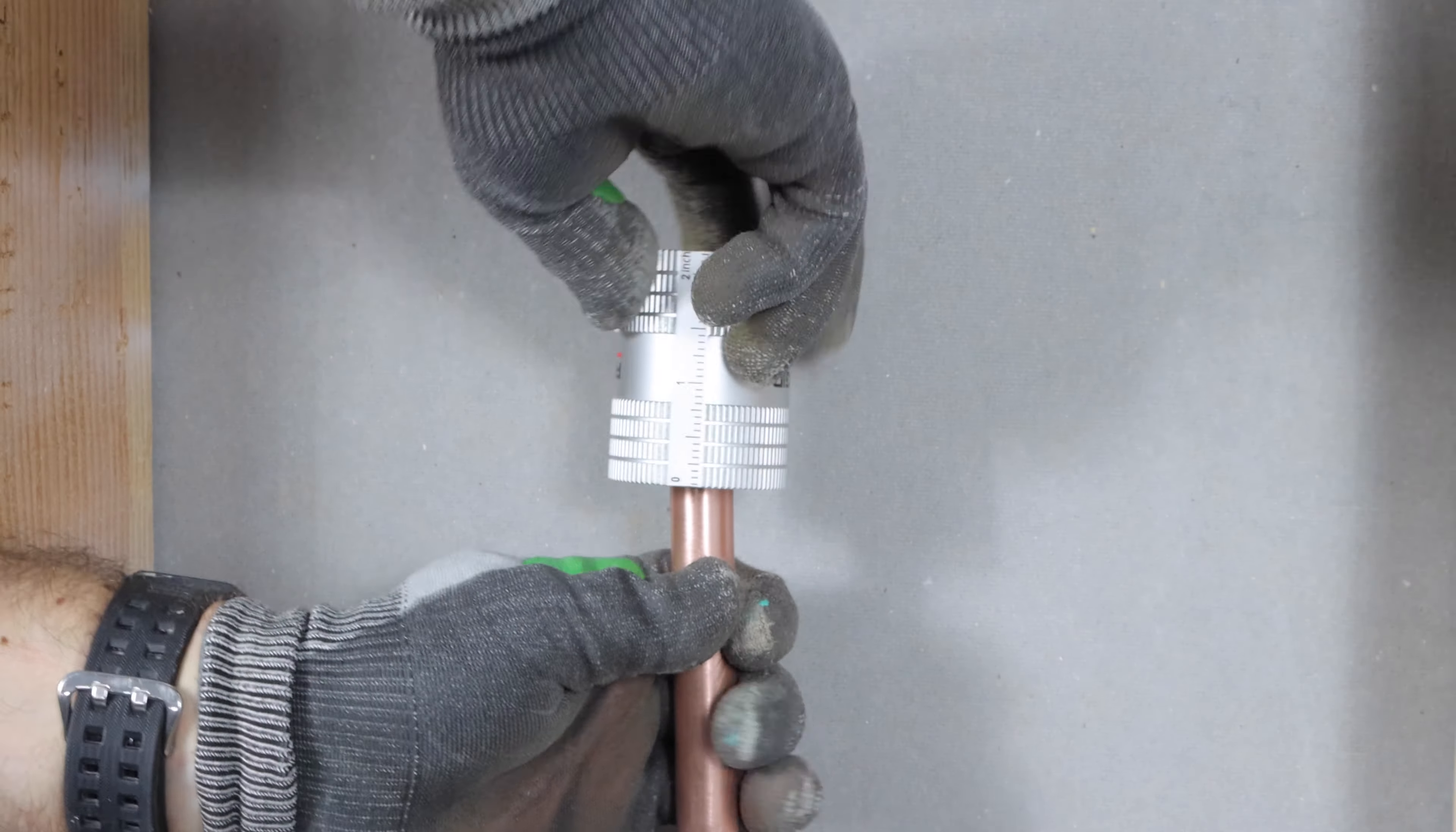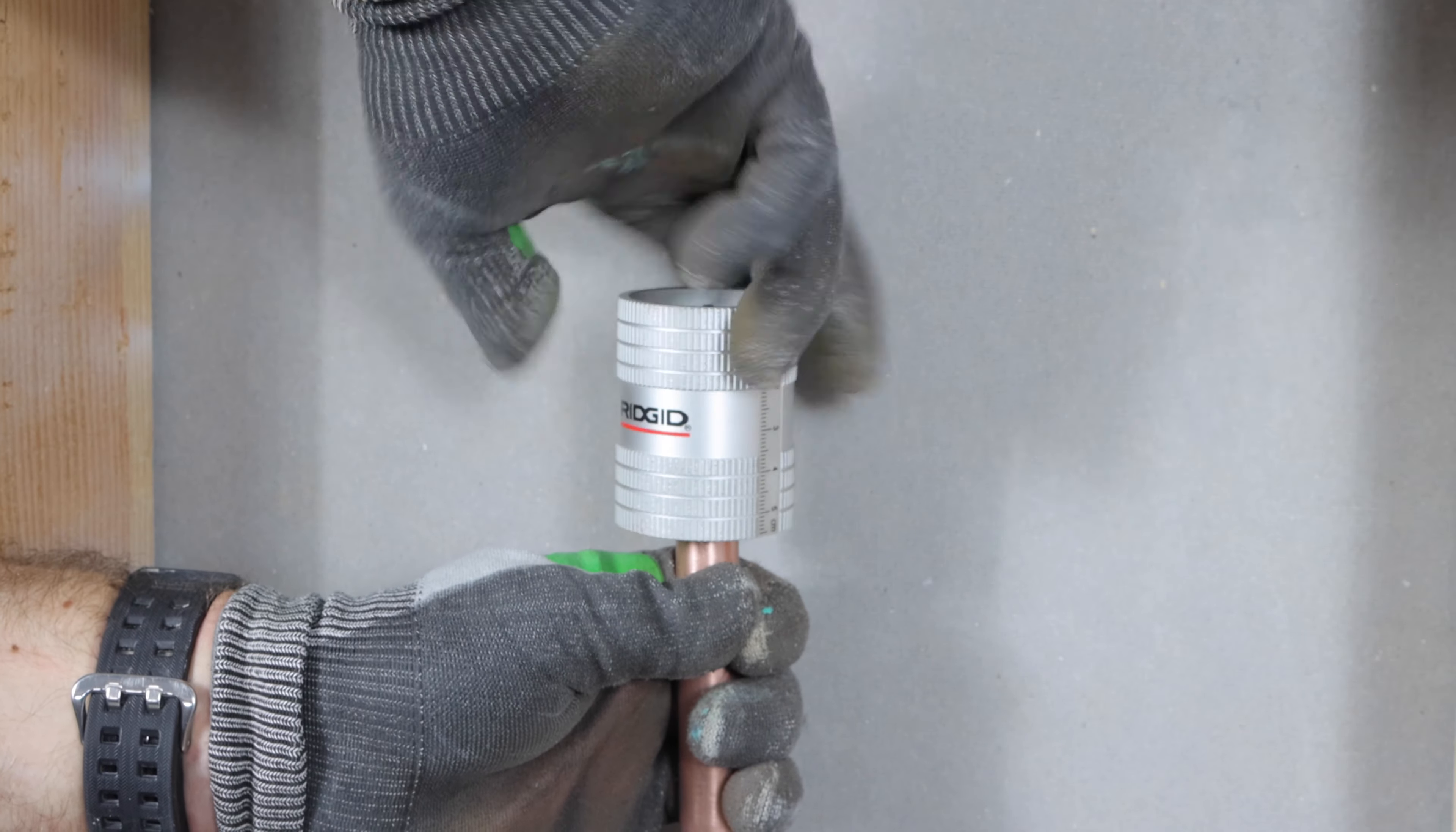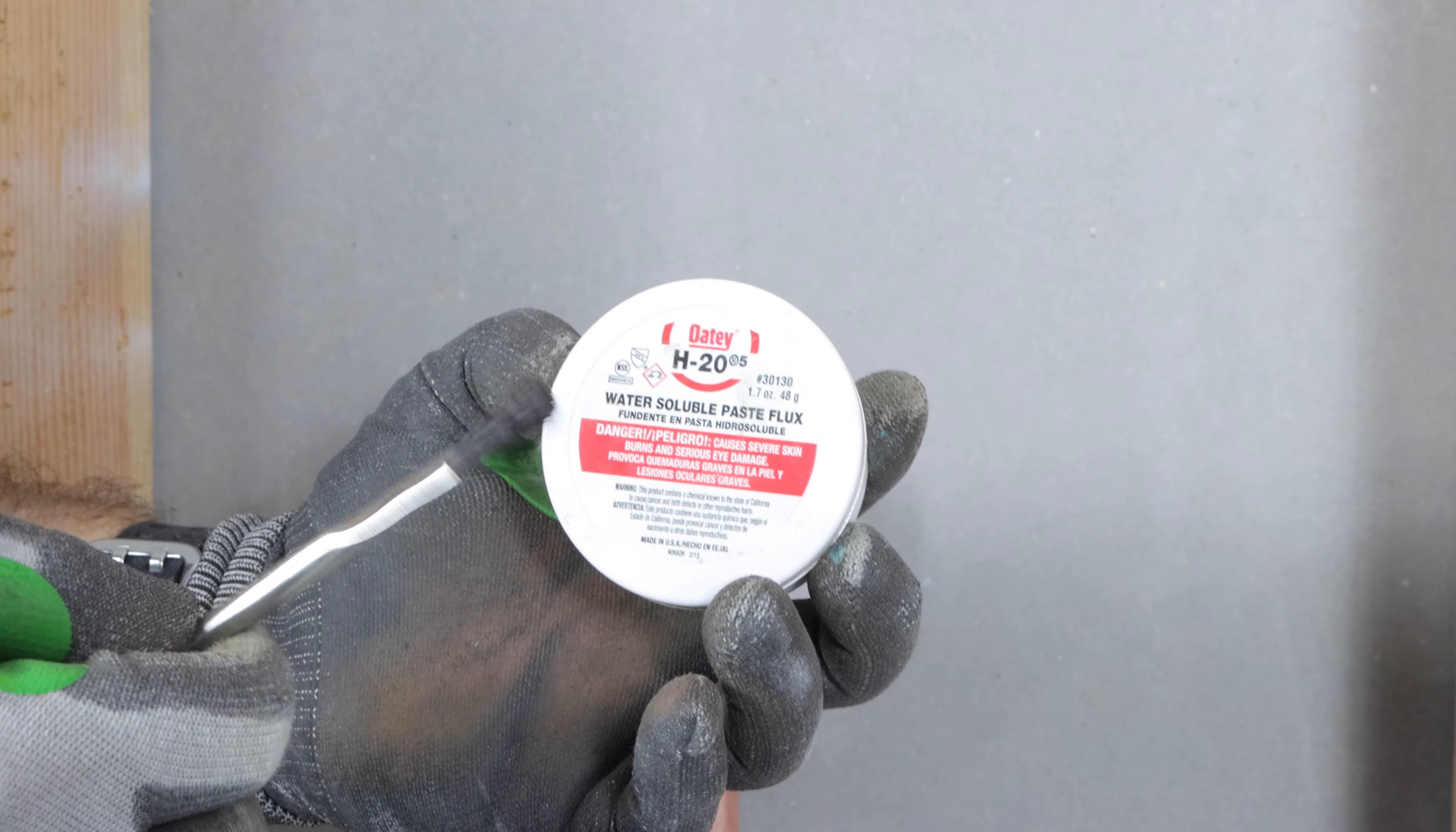The next step, and this is important, is to deburr the inside of the copper pipe. This is a rigid reamer. This deburrs both the inside and the outside of the copper pipe. So you want to do maybe like 10 to 15 revolutions both times. Then I hit that one more time with the nylon grit pad. That really just removes any of the burrs on there.